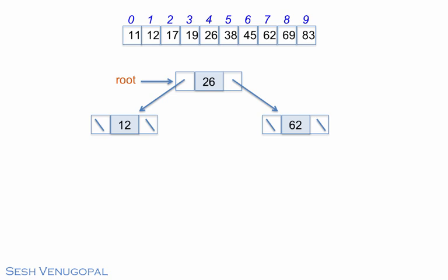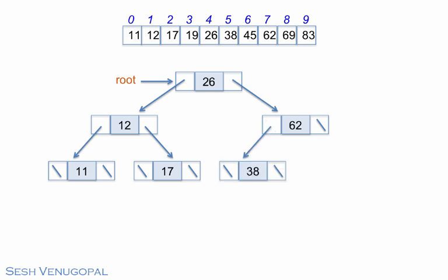We can recursively build trees under 12 and 62. Taking 12 to be the root of the tree to be built for the left subarray, 11 becomes its left child and 17 its right child. On the other side, taking 62 to be the root of the right subarray, 38 becomes its left child and 69 its right child.